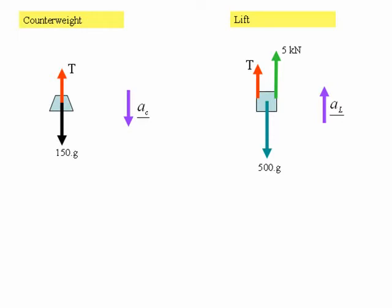Having drawn our free body diagrams, the next step is to write down our equations of motion. Considering first of all the counterweight, the resultant force is T minus 150G. Putting that into Newton's second law gives us the mass times acceleration on the right-hand side, which is minus 150A — the minus sign because the acceleration is in the downwards direction. Transposing that equation gives us an expression for T, and we'll call that equation one.